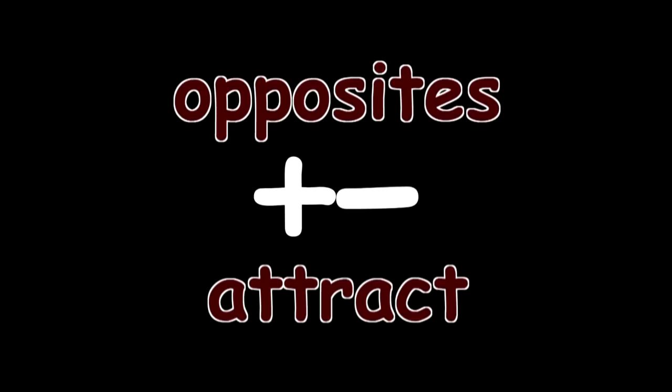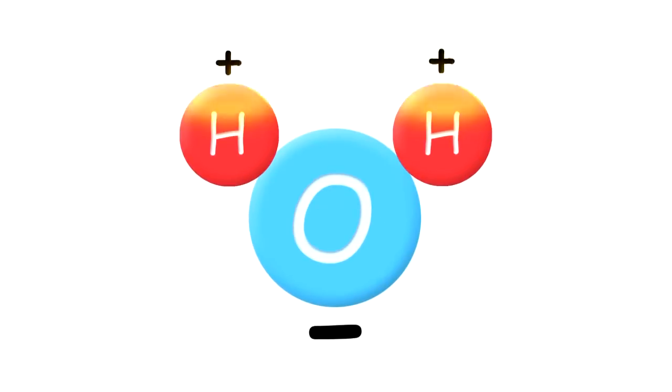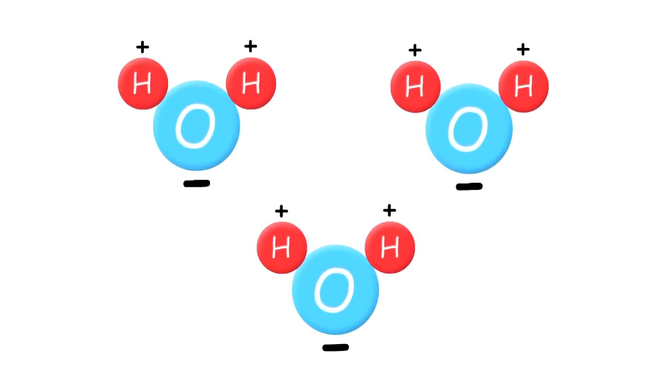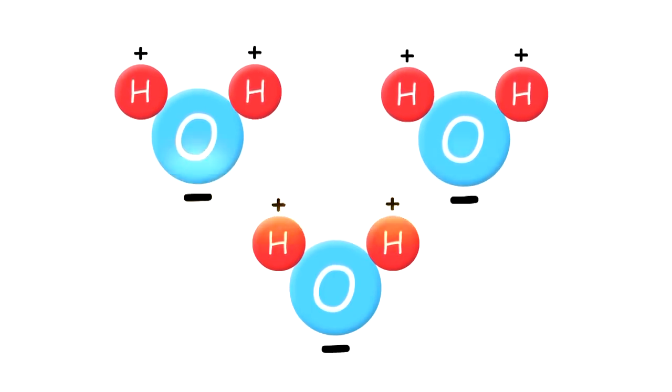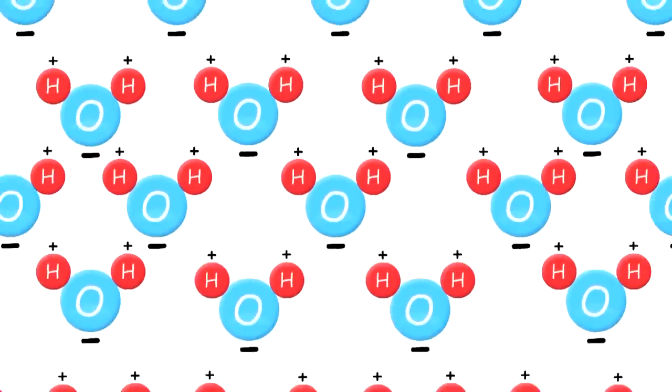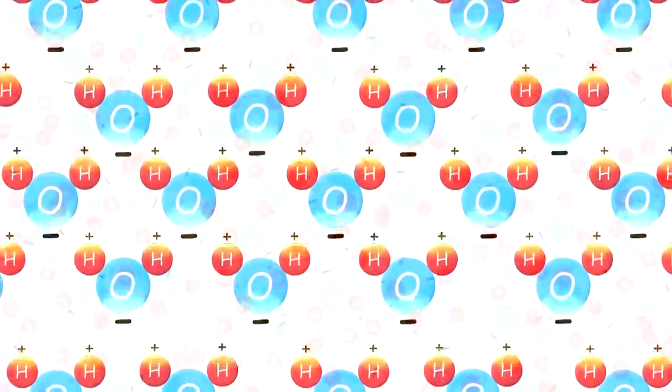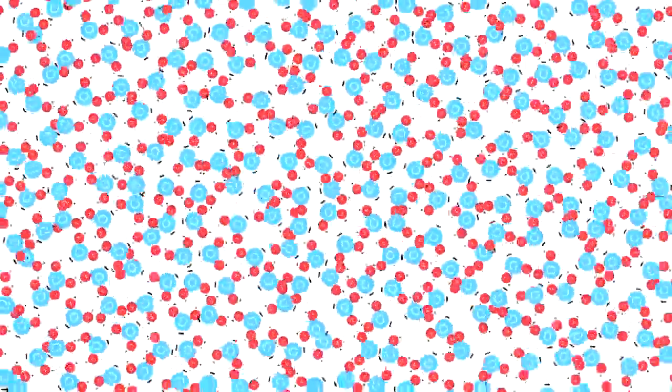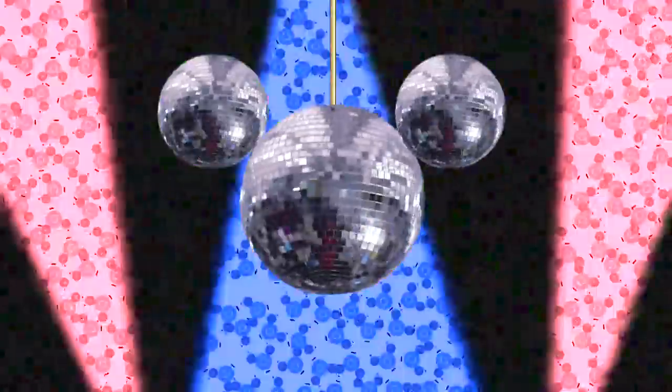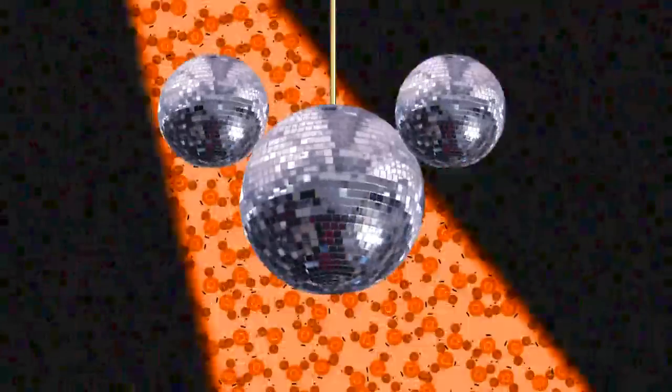This might just be the second most universally known bit of chemistry: Opposites attract. The positive hydrogen side of every H2O molecule is going to attract, and be attracted to, the negative oxygen sides of other nearby H2O molecules in all directions. More and more of them pull closer and closer together until they're like people in a hot crowded dance club, packed so close together they can hardly move, but still turning and moving wildly.